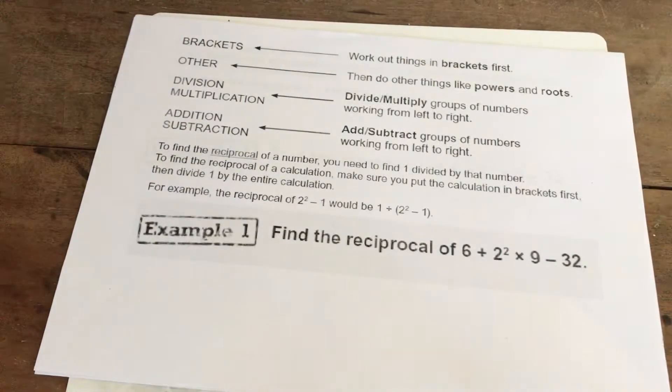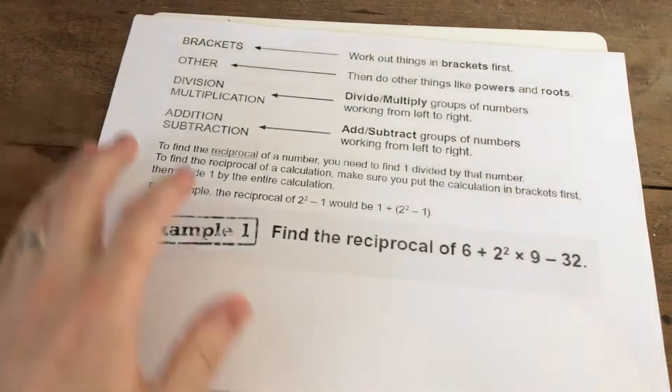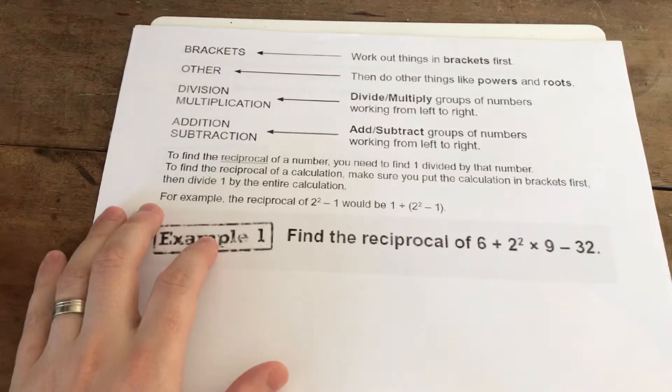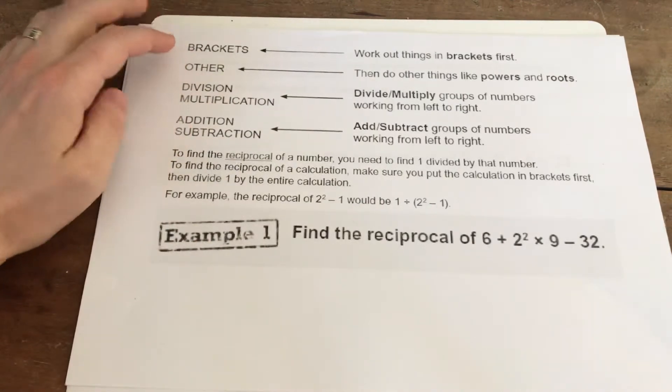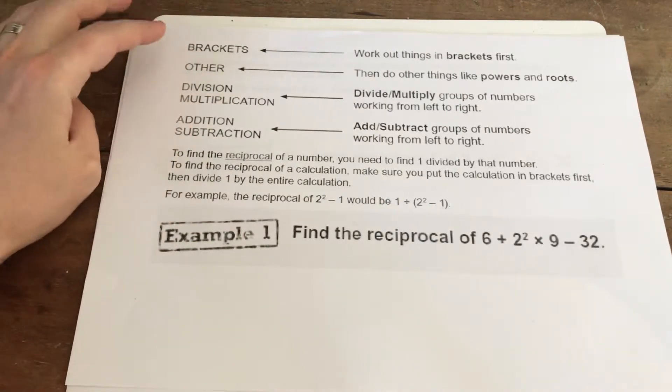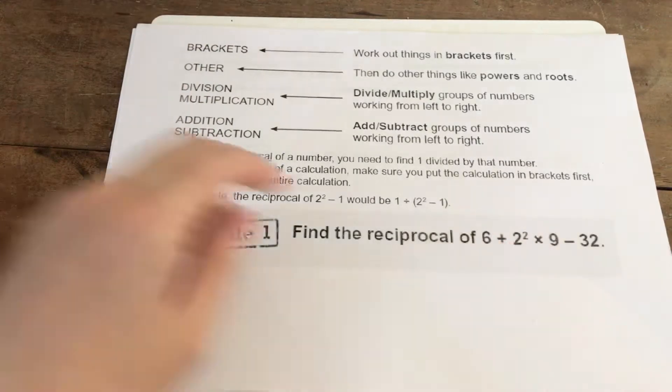So if we have a look, Order of Operations, you sometimes see it referred to as BODMAS or BIDMAS. It refers to the order in which we should do operations when we have a long calculation like shown down here.